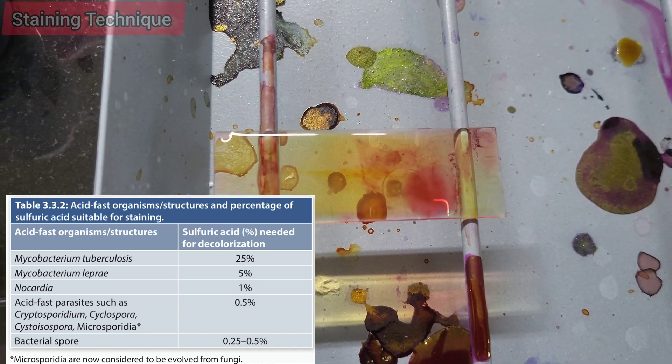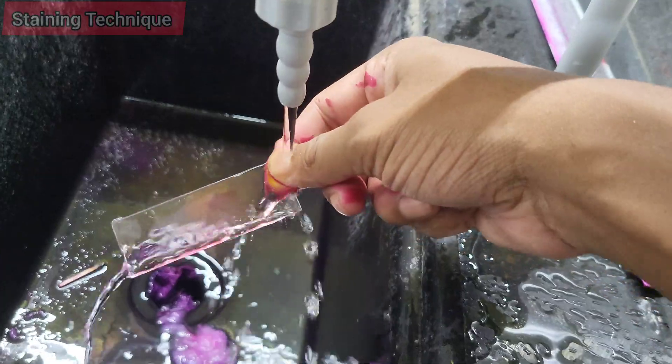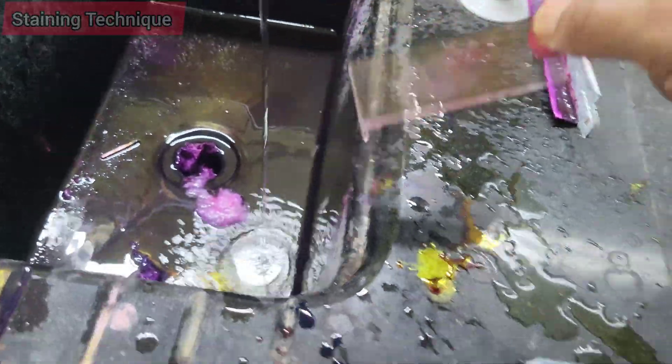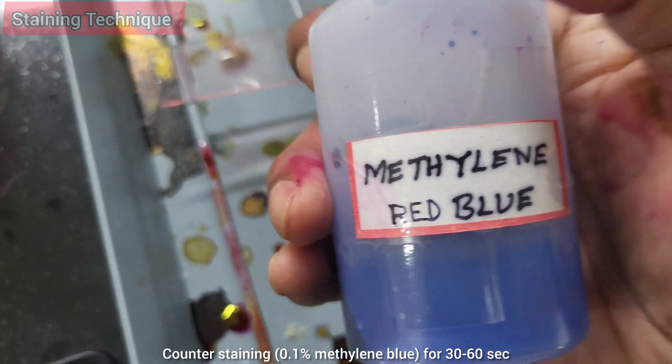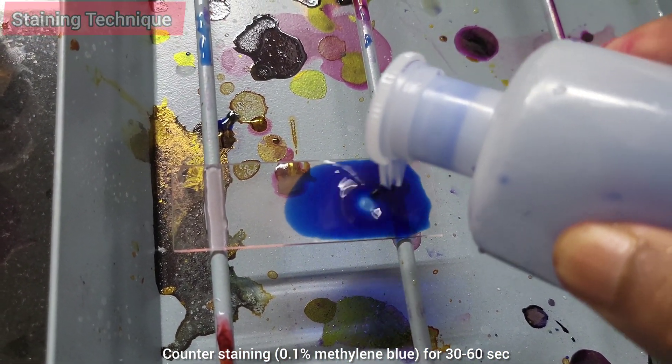Step three: counter staining with the help of methylene blue or malachite green. 0.1% methylene blue is poured onto the slide and left for 30 to 60 seconds. Why counter stain is used? To provide contrast by staining non-acid-fast organisms and background. Why Ziehl staining is important in TB diagnosis? It provides early evidence of Mycobacterium tuberculosis infection.